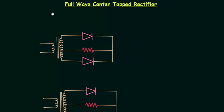In the previous lecture I explained the working of a full wave bridge rectifier. Now I will explain how the center-tapped rectifier works. This is the circuit of the center-tapped rectifier, and the first thing we have to understand is the name — why we call it a center-tapped rectifier.